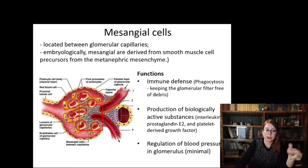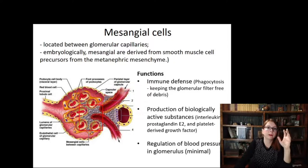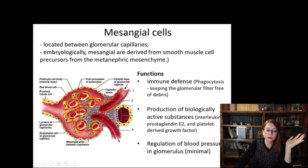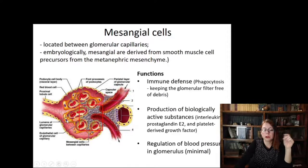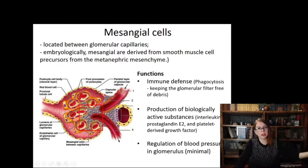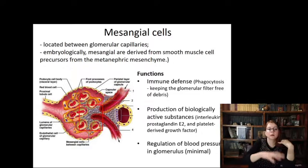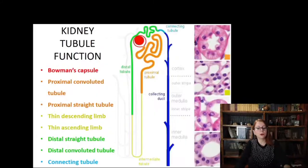Mesangial cells are mentioned because there is a wide group of nephrology diseases called glomerulonephritis, with different types caused by proliferation of different cell types: parietal wall cells of the Bowman's capsule, podocytes, mesangial cells, or neutrophil arrival to the glomerulus. To understand all subtypes and the classification of these diseases, you must be aware of every cellular subtype present in the kidney glomerulus.